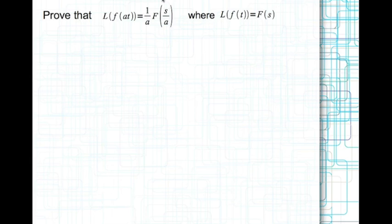Now we look at the time scaling property of Laplace transforms. We are looking at the Laplace transform of f(at), where a is a scalar that scales time. That is equal to (1/a) times capital F(s/a), where capital F(s) is the Laplace transform of f(t). Essentially we replace s by s/a in F(s) and multiply by 1/a to get the Laplace transform of f(at).